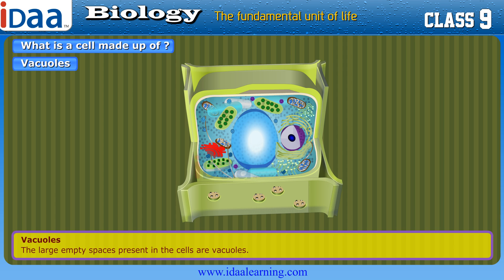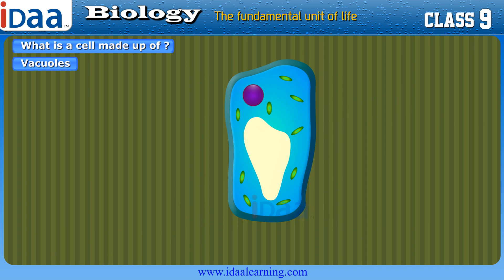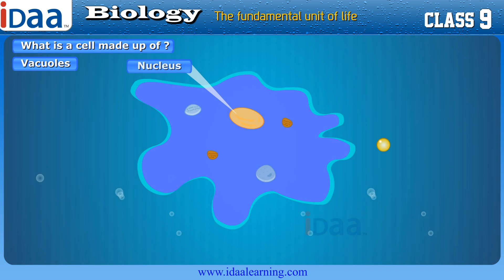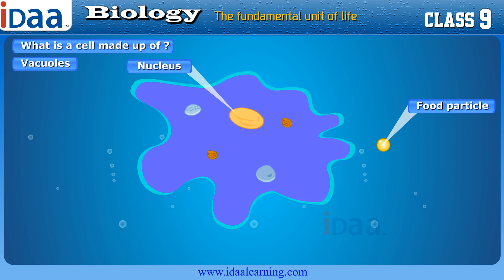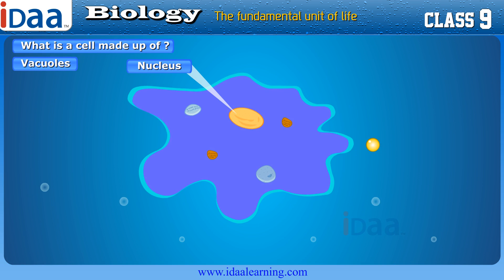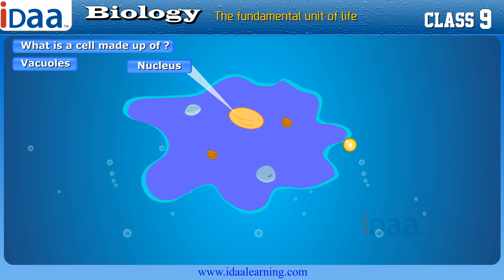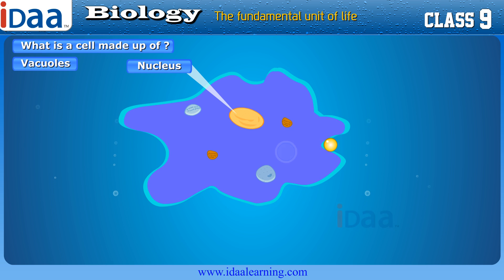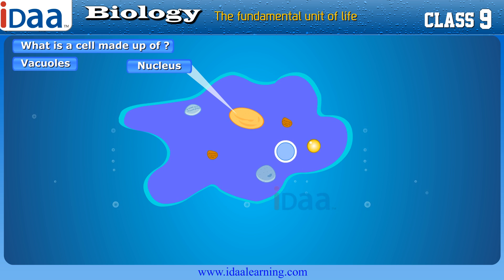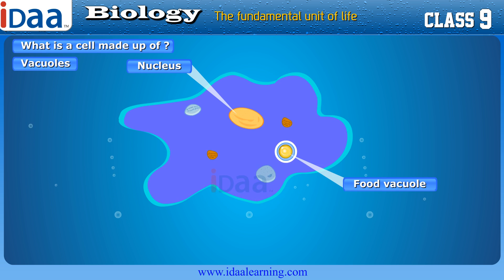The large empty spaces present in cells are vacuoles. In plant cells, vacuoles are very large and contain cell sap that provides rigidity to the cells. In animal cells, vacuoles are small in size. In amoeba, food vacuoles contain the food items that the amoeba has consumed. In unicellular organisms, vacuoles help in expelling excess water and some waste from the cell.